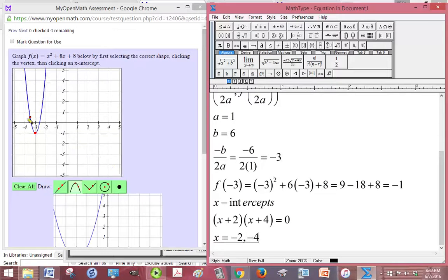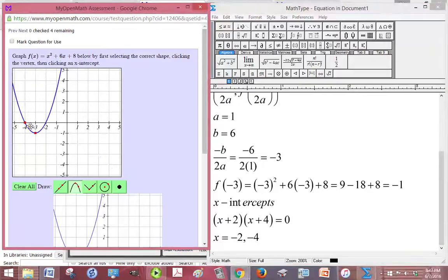So it doesn't matter which one you use, I'll pick negative 4, and then you'll just click Submit. So that's how you handle that problem.